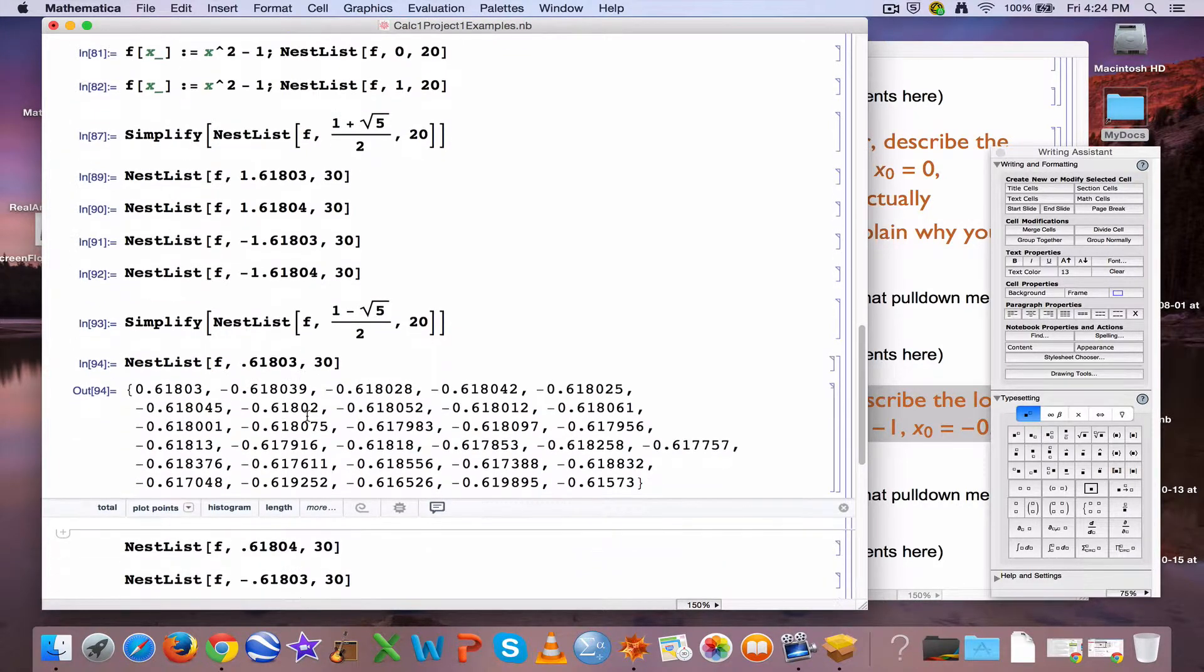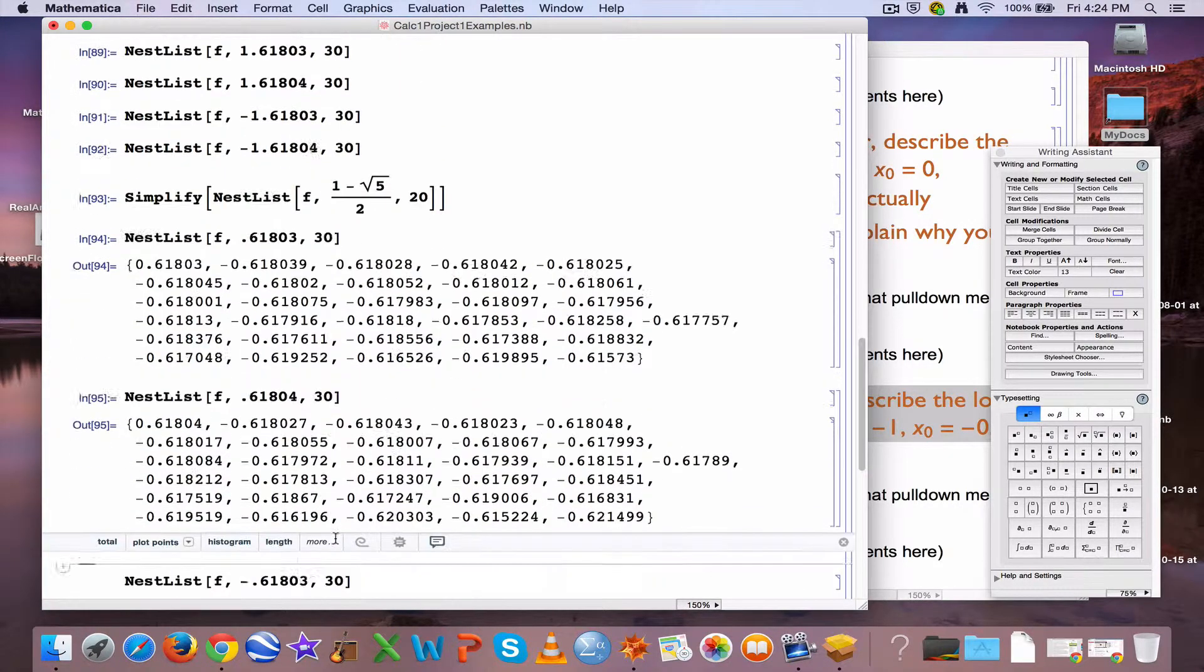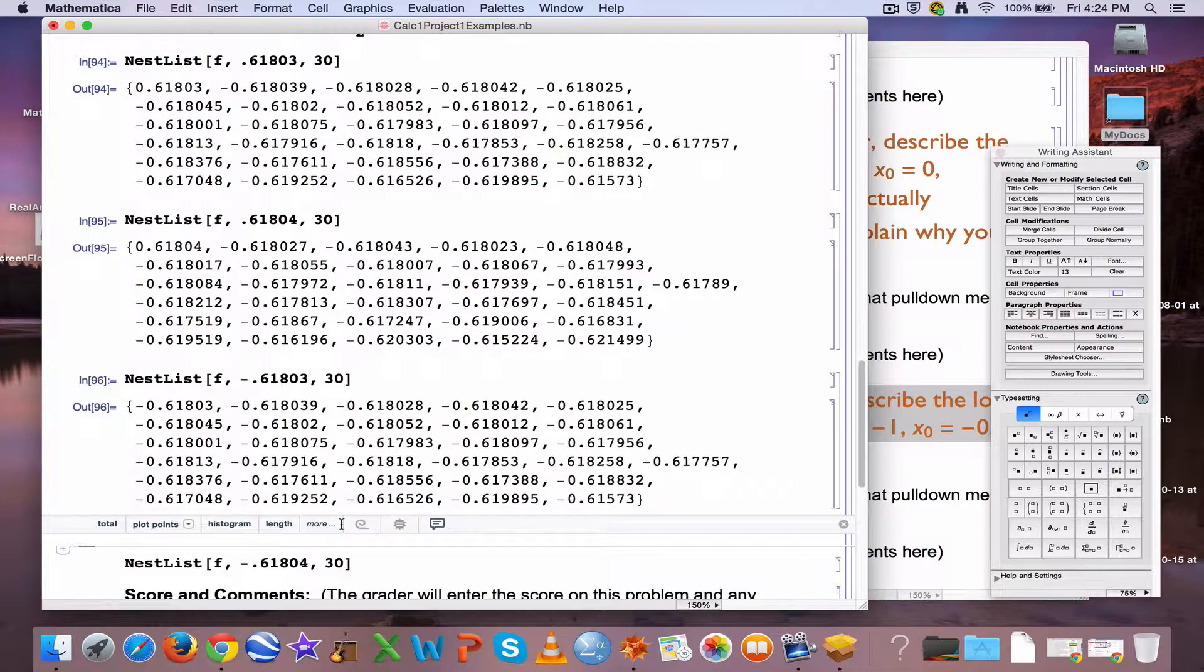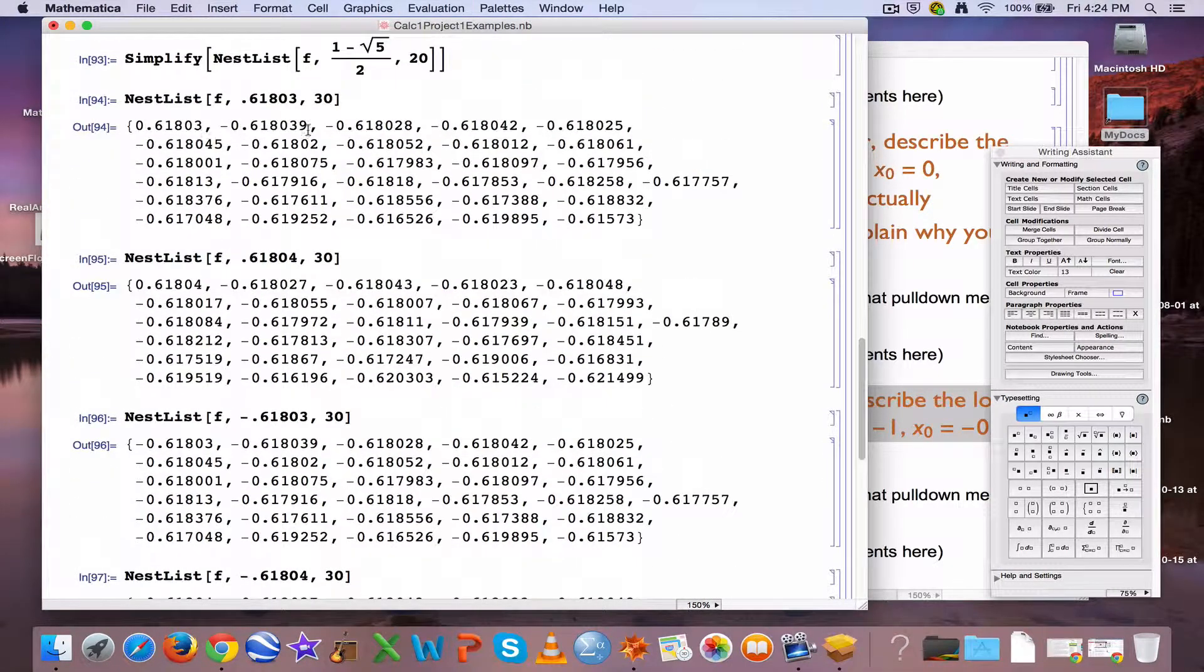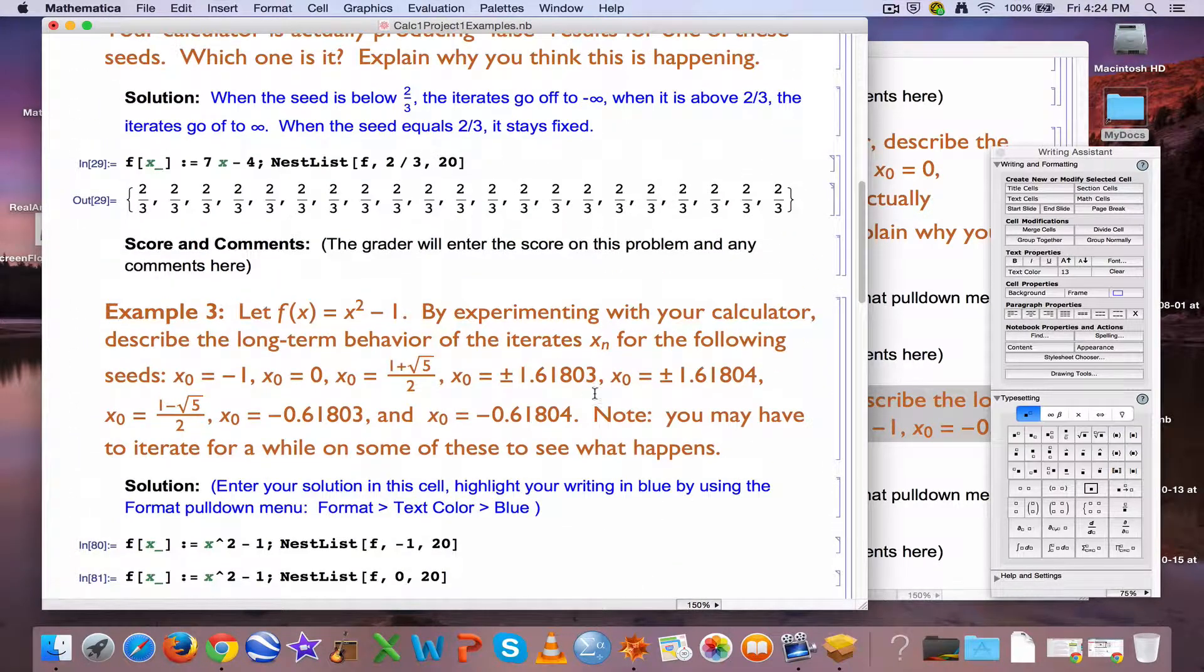These are all approximations to (1 - √5)/2. Actually, the negative ones are approximations, excuse me. What's happening with these? They aren't changing much if you look at them. These numbers are not changing very much. They are changing some, but slowly. So evidently, this is where the note comes into play. You may have to iterate for a while to see what happens.